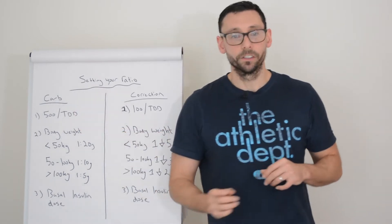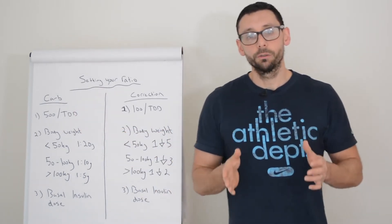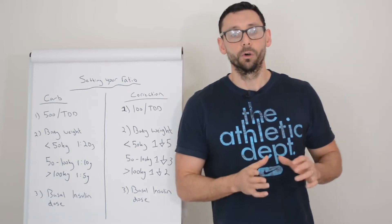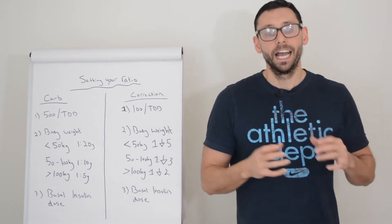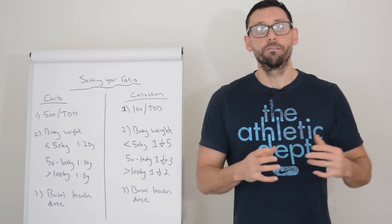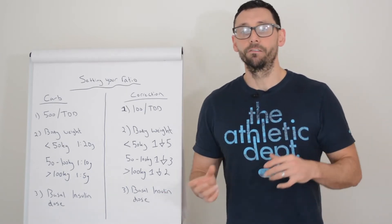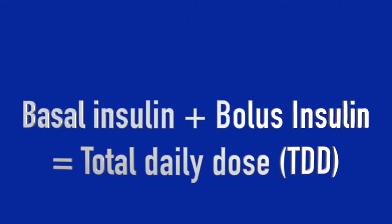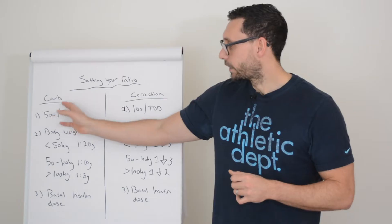So the first method is using your total daily dose of insulin. This includes both your background insulin and the average of your rapid insulin that you've given over the course of the last three days totaled up. And then what you do is you take that figure, your total daily insulin dose, you take 500 and divide it by your total daily dose.